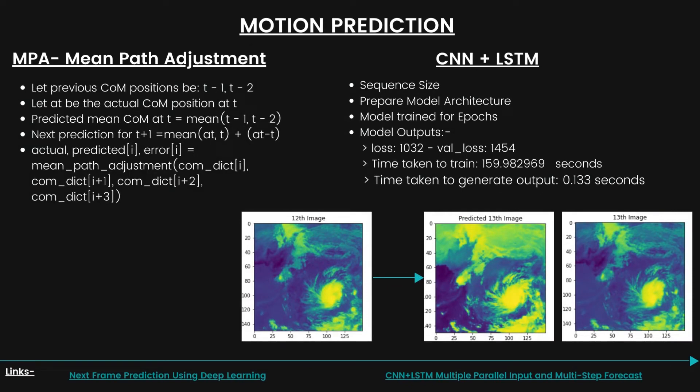After getting the output from K-means clustering, we proceed to motion prediction. We considered two algorithms: MPA and CNN plus LSTM. In MPA, we use images at four different timestamps — t, t-1, and t-2 — to predict the fourth image at timestamp t+1. In the CNN plus LSTM model, our architecture consists of a batch normalization layer, three LFLBs, a flattening layer, two LSTMs, and a dense layer.